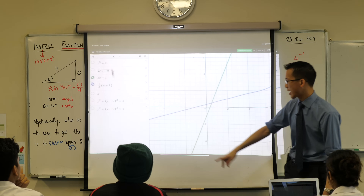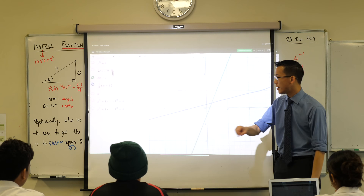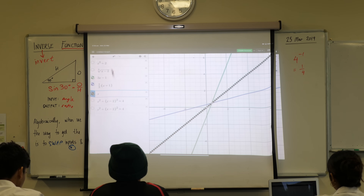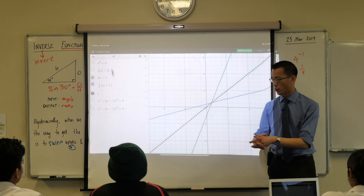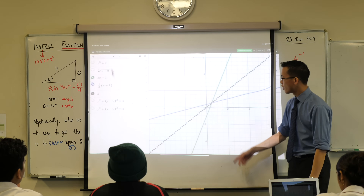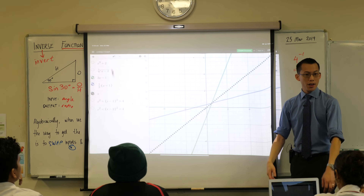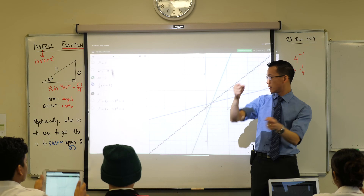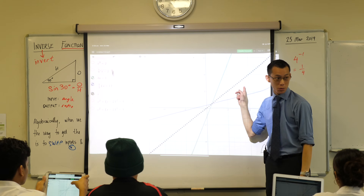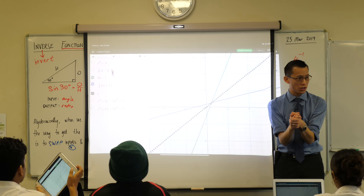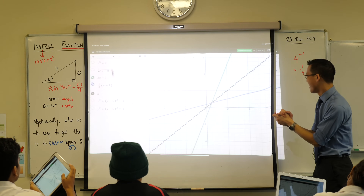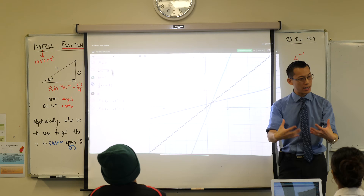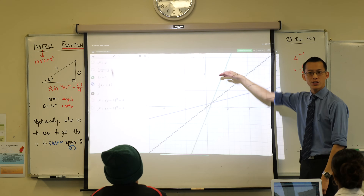I'd love you to start a new line and just type in the single letter X. Did you notice there's a relationship between the function in green, its inverse, and this dotted line y equals x? If you pick up your screen and turn it 45 degrees — or just turn your head — so that the y equals x line is straight up and down, you can see the relationship between the function and its inverse. This is symmetrical, isn't it? The y equals x line is like your line of symmetry, and going from one to the other is like flipping over.